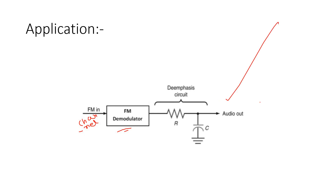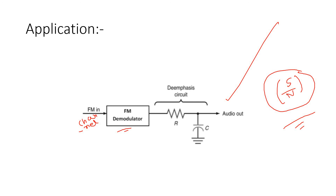Pre-emphasis and de-emphasis are widely used in frequency modulation to keep the S/N ratio intact. Signal power cannot be changed, but noise power is lower at low frequency and increases with frequency. So we amplify high frequency components of the message signal in the transmitter using pre-emphasis, and attenuate those amplified high frequency components in the receiver using de-emphasis, maintaining proper signal-to-noise ratio across all frequencies. Thank you for watching.